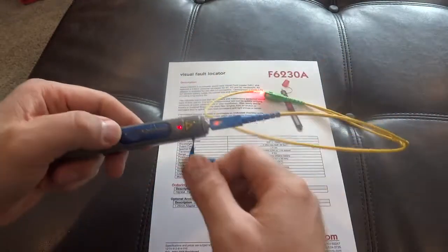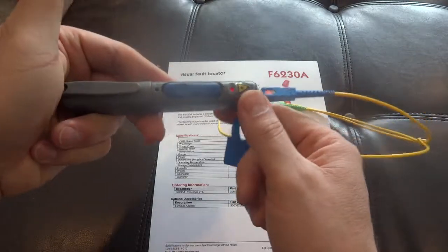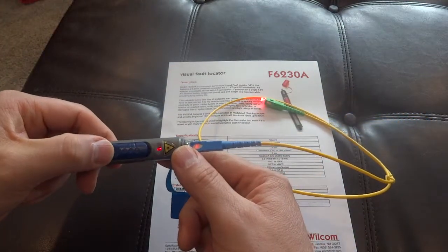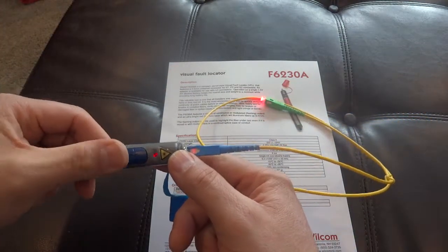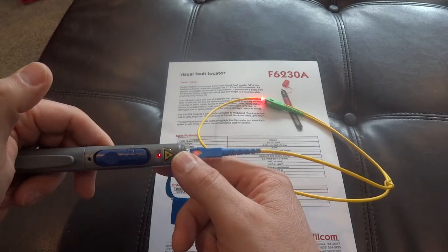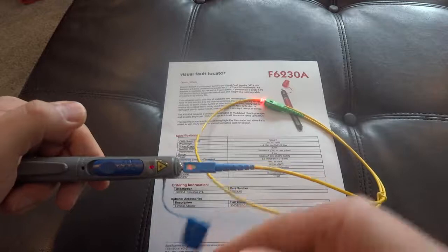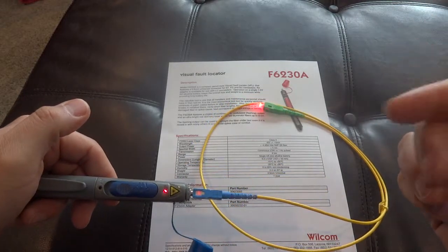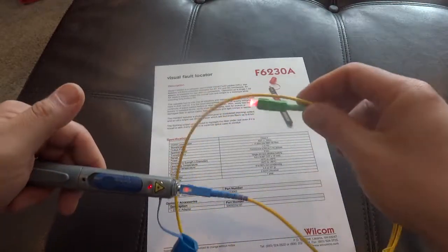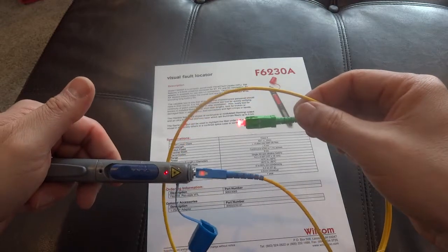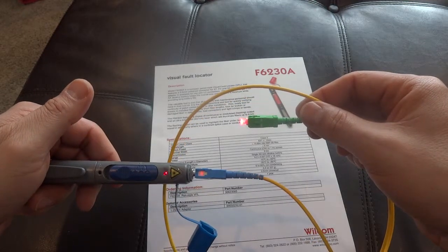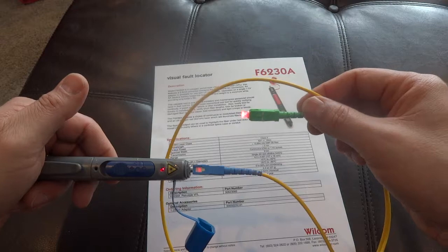This particular device has a setting that lets it modulate. The first one is what they call continuous wave, which means it's on all the time. Then you've got modulating, which helps you see it a little better. If you've got a bunch of things, this will give you a blinking light to look at instead of a straight solid light. That's it, that's all about that.